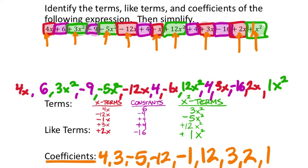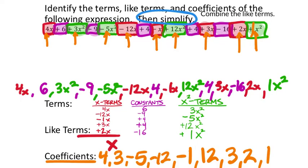To simplify means to combine the like terms. Going back to the x terms list, I enter the coefficients into the calculator: 4 minus 12 minus 1 plus 3 plus 2 equals negative 4 x's. For the constants: 6 minus 9 plus 4 plus 4 minus 16 equals negative 11.